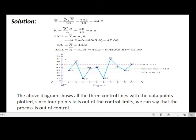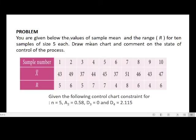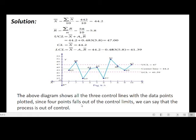UCL = x double bar + A₂ × R̄ = 44.2 + 0.58 × 5.8 = 44.2 + 3.364 ≈ 47. Central line CL = x double bar = 44.2. LCL = x double bar − A₂ × R̄ = 44.2 − 0.483 × 5.8 = 41.39. So the three control limits are: UCL = 47, CL = 44.2, LCL = 41.39.